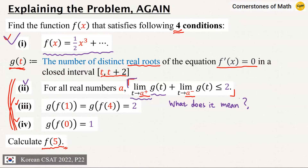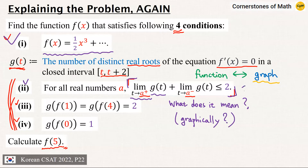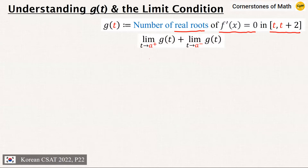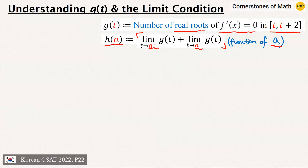What does this condition mean? This statement alone looks abstract, but a function can be visualized in a way we call the graph. So can we draw some graphical meaning of this condition? Let us take a closer look at g(t). As we've already seen, g(t) is defined as the number of real roots of f'(x) = 0 in the interval [t, t+2]. Then we have this limit. The value of this limit depends on the value of a, so this entire thing is a function of a. For a simpler expression, let us call this function h(a). Then the second condition can be expressed as: the value of h(a) is always less than or equal to 2.